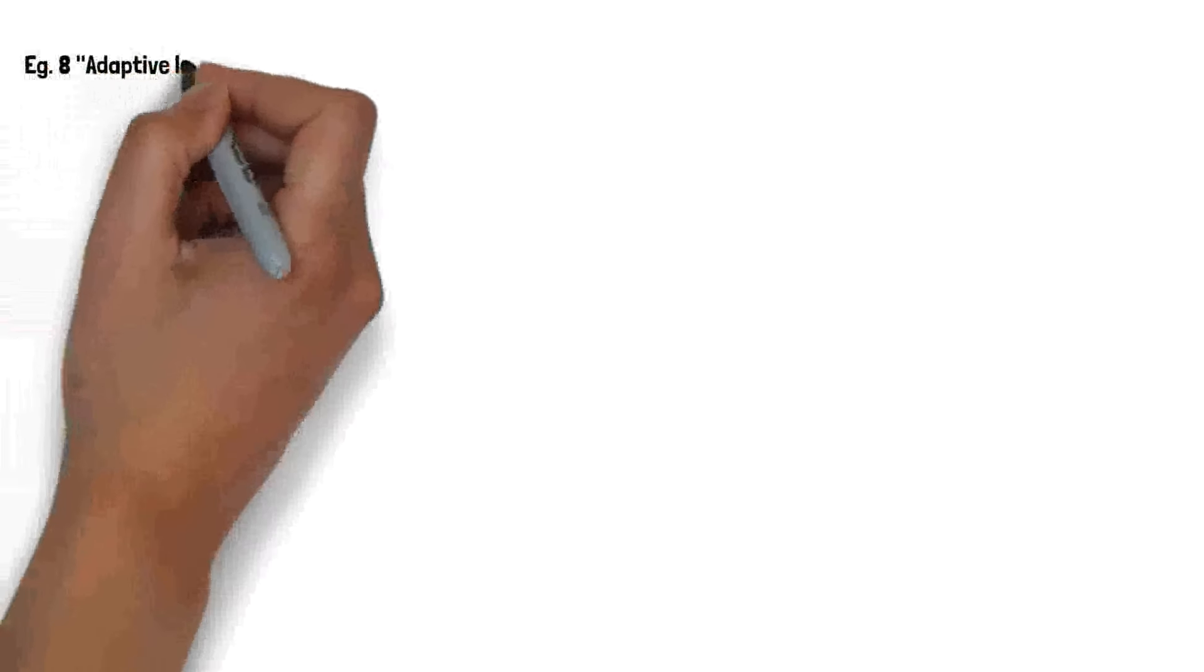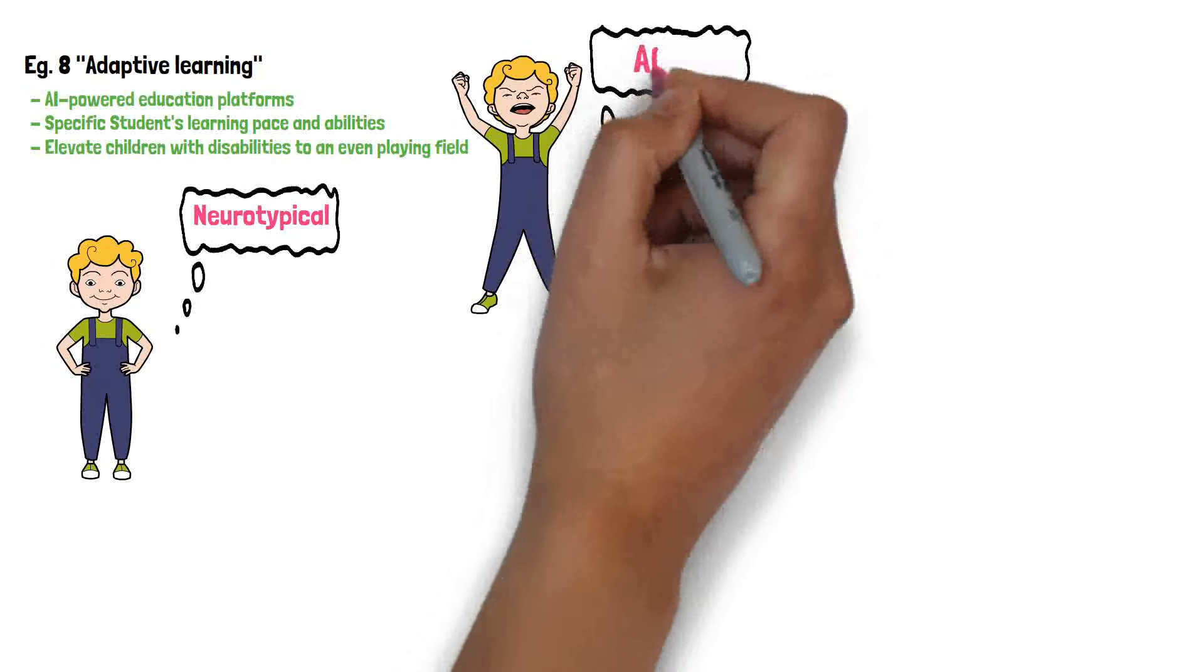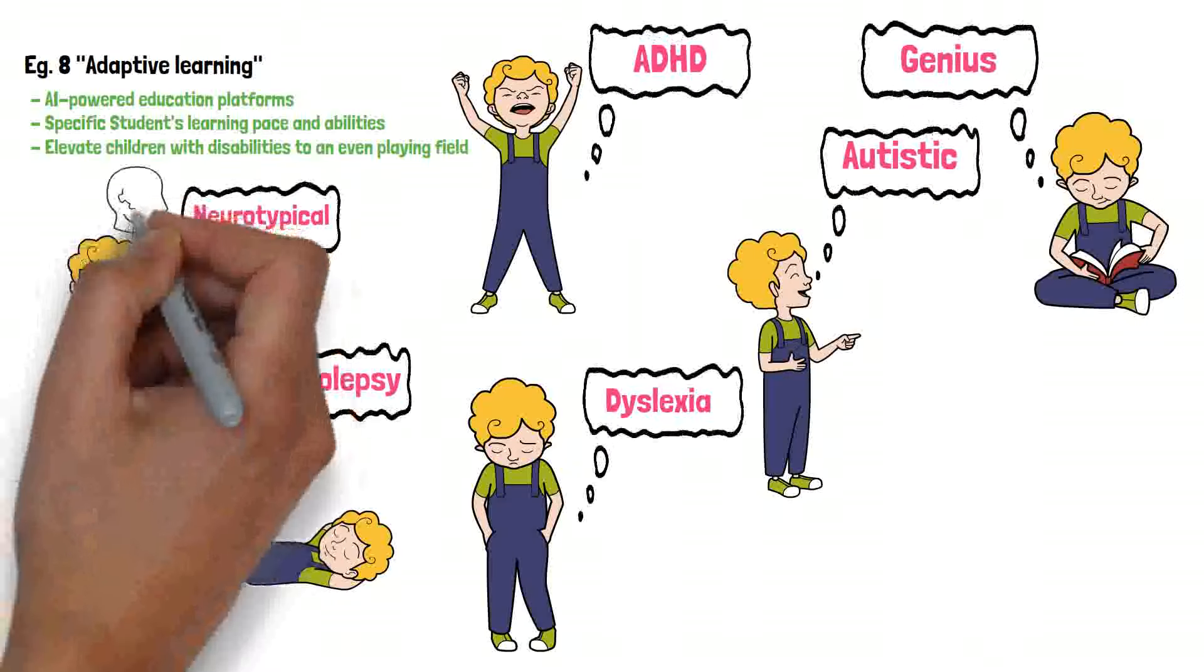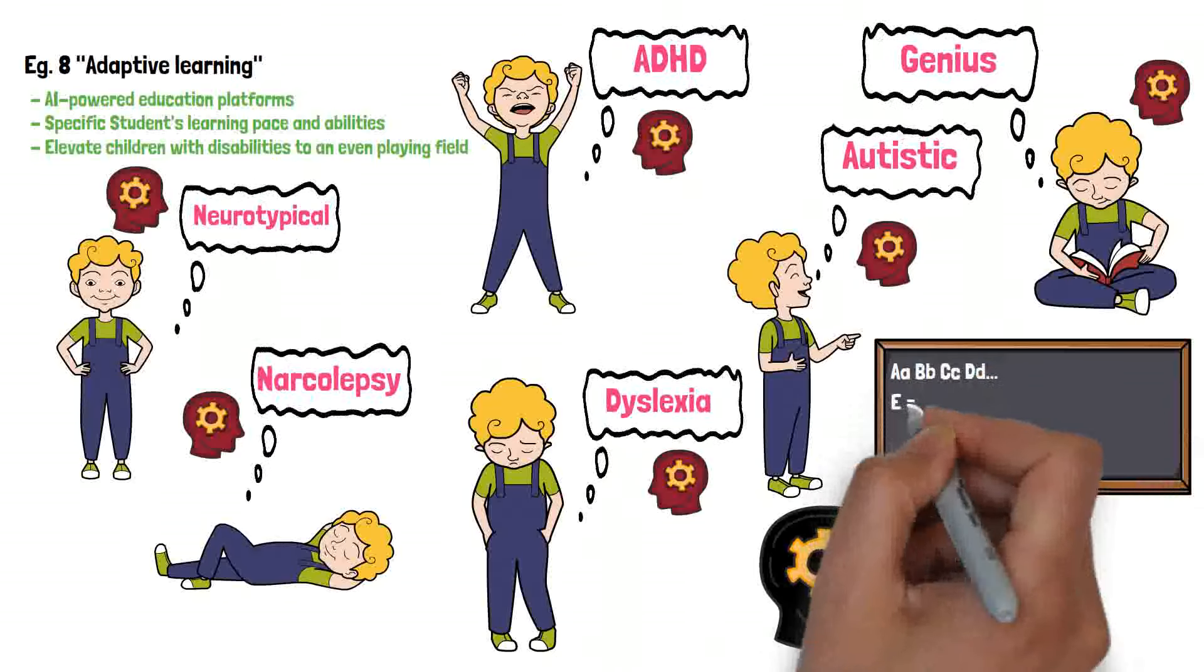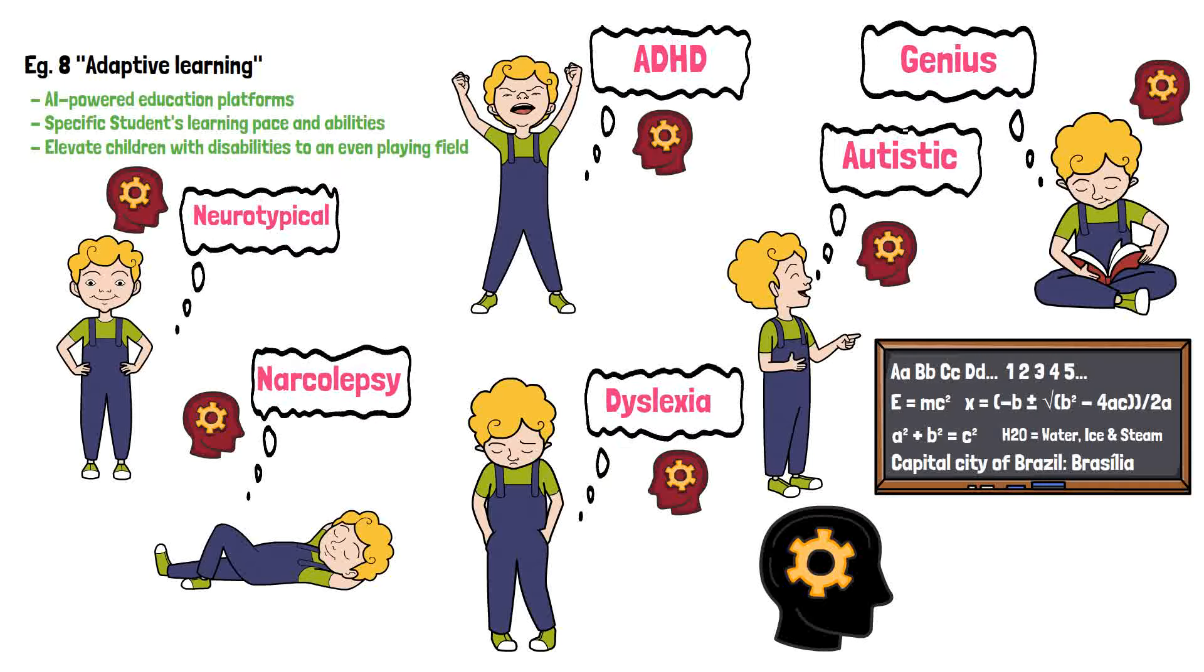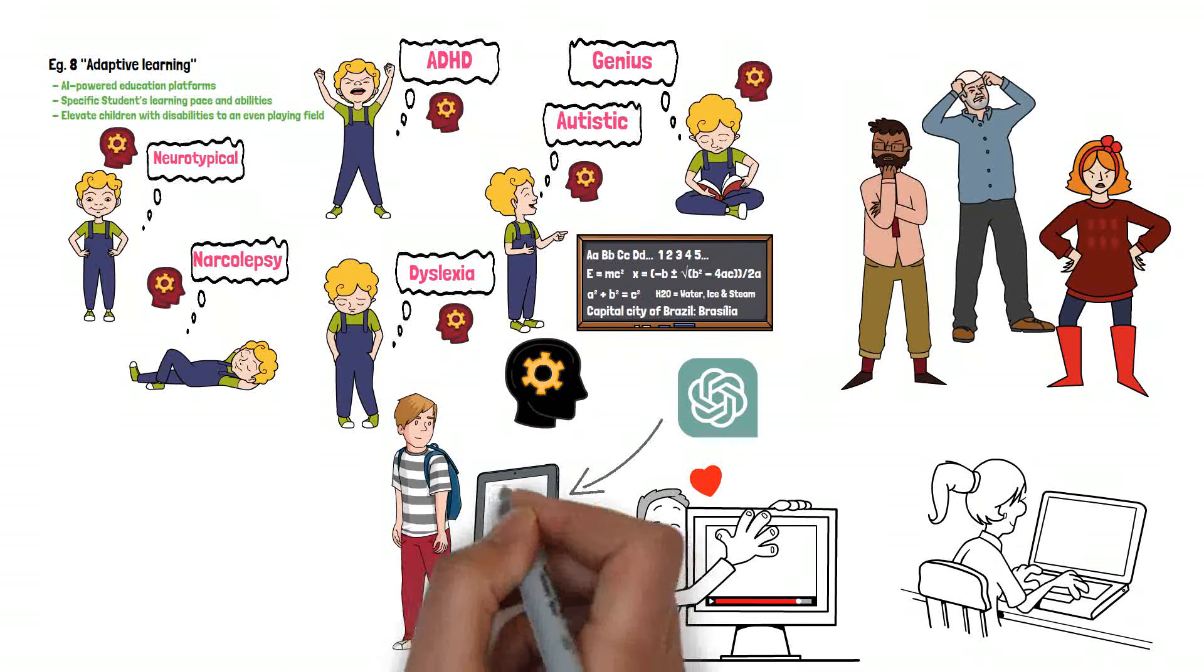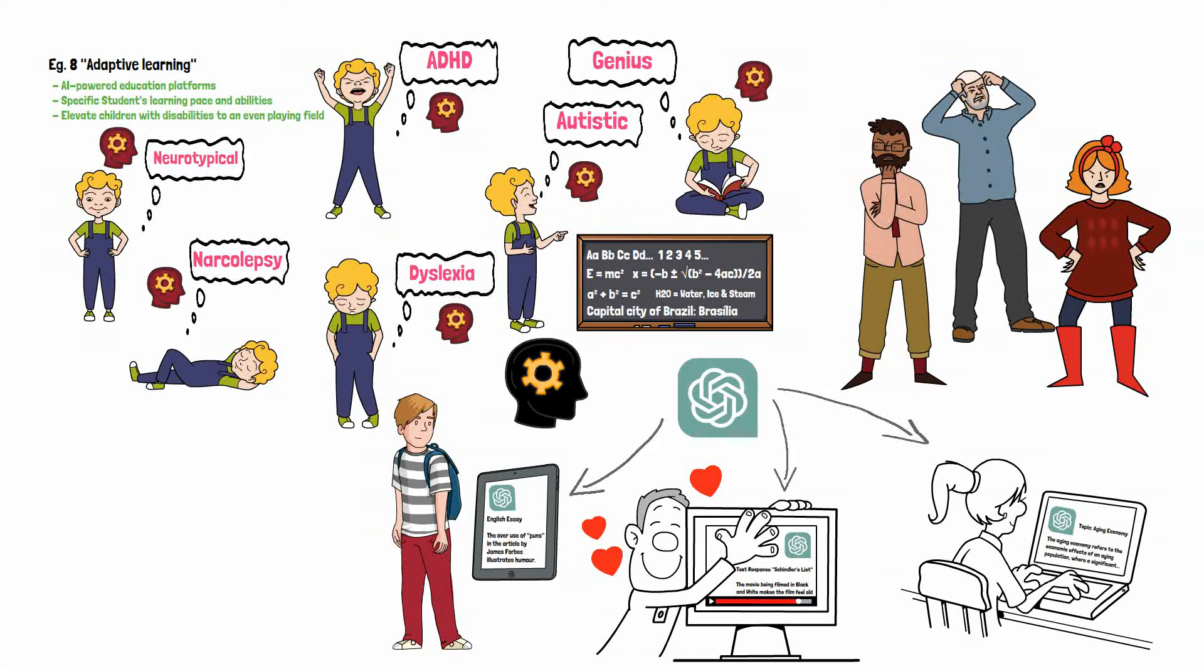Adaptive learning. AI-powered educational platforms can adapt to each student's learning pace, preferences and abilities. The system can analyze the student's performance data and adjust the content and difficulty level of the learning materials accordingly. For kids with learning disabilities, this can assist in closing the gap between them and the average student. In fact, just recently, we have seen an increased number of school teachers complaining that their students are utilizing chat GPT to complete essays and assignments.